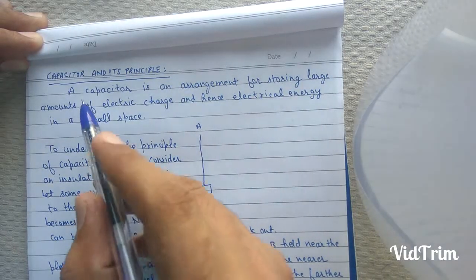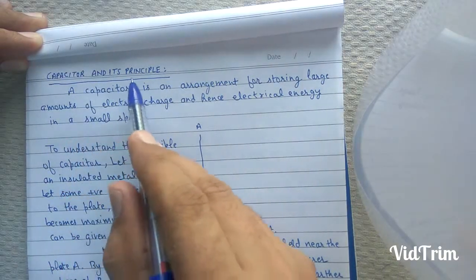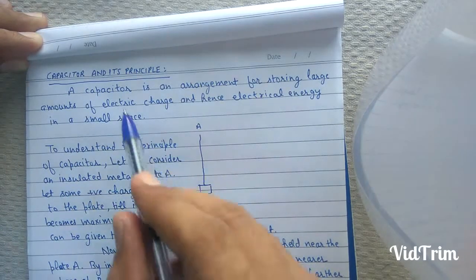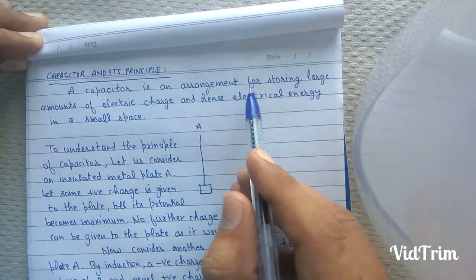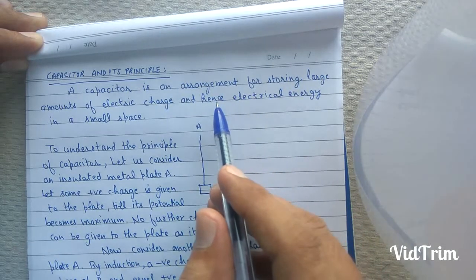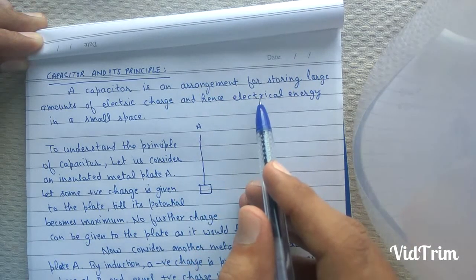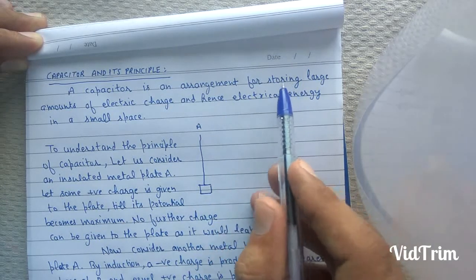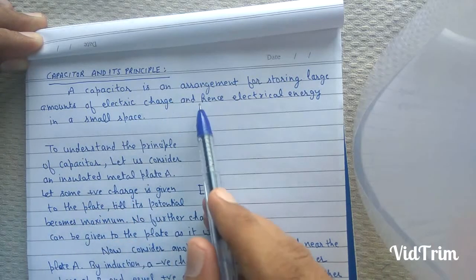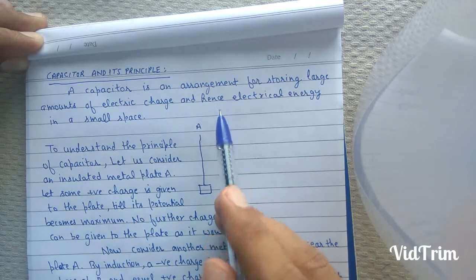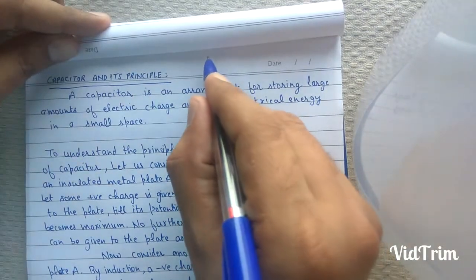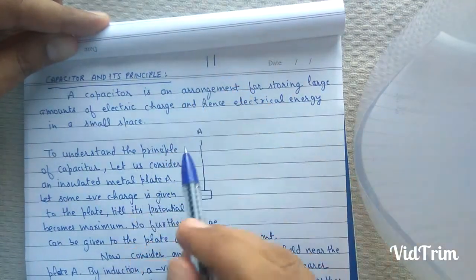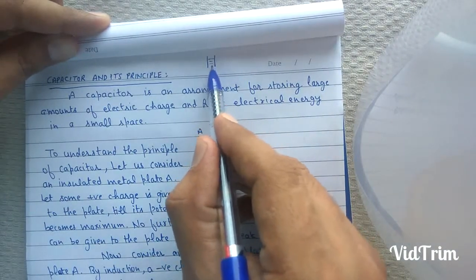Students, our next topic is capacitor and its principle. A capacitor is an arrangement for storing large amounts of electric charge and hence electric energy in a small space. A capacitor generally consists of two conductors separated by some insulating medium.